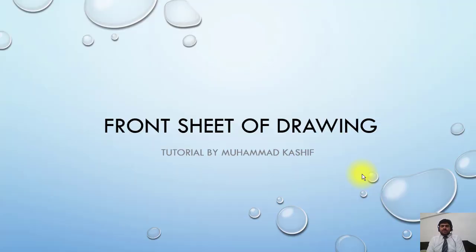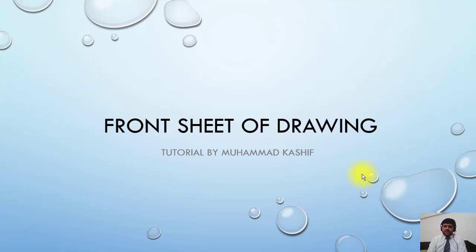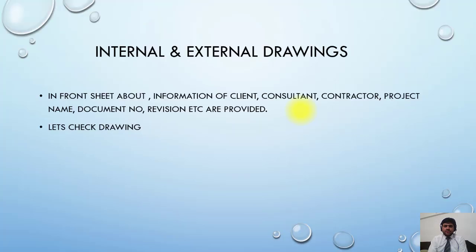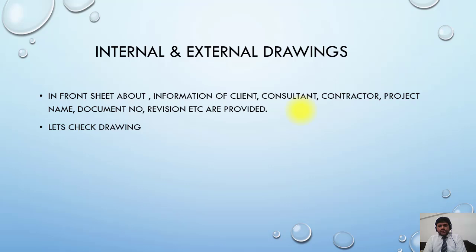Welcome. Now I will start to explain about the front sheet of the drawing. We already have a basic understanding about the drawing, so let's start with the front page — what information is available and what we should look for. On the front page, information regarding the client, consultant, contractor, project name, document number, revision number, etc. is available.